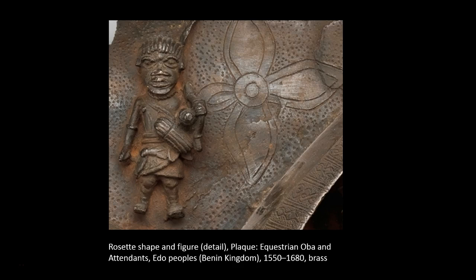The rosette shapes that adorn the background of the plaque were possibly derived from Christian crosses brought by European traders. Even the horse that the oba rides was originally introduced to West Africa from across the sea. There is nothing quite like these plaques in all of Africa or Europe from this period. Some scholars speculate that they were created as a way of reconciling traditional African brass sculptural forms with the illustrated books and prints — perhaps illuminated manuscripts — that may have been in the possession of European travelers.